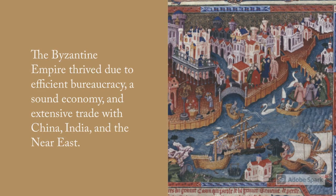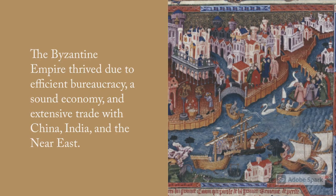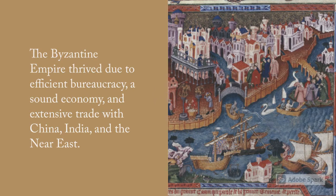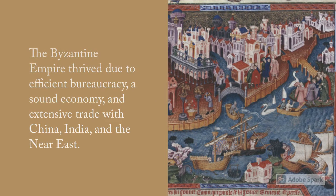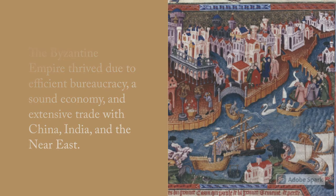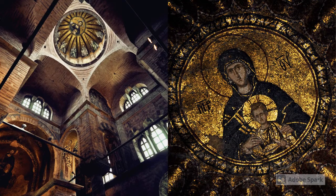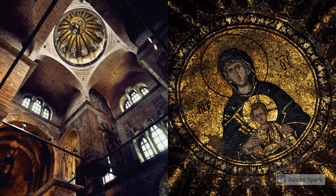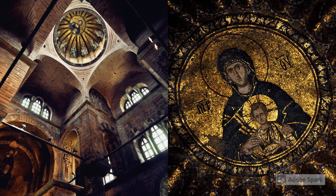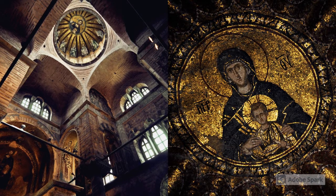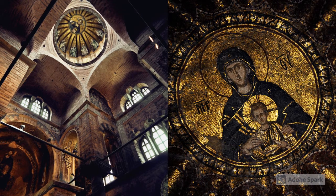Although trade and urban life pretty much ceased to exist with the Western cities of Rome and those on the Italian peninsula, the Byzantine Empire flourished because of its extensive trading with Eastern and Middle Eastern countries. In spite of constant pressure from hostile forces, the Byzantine Empire survived until 1453, when the city of Constantinople and the remains of its once powerful empire fell to the Turks — and that's why the country is now called Turkey.